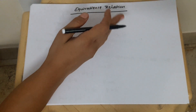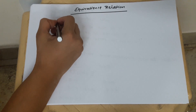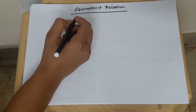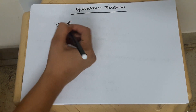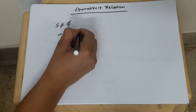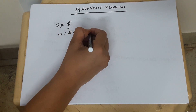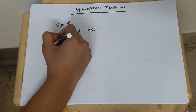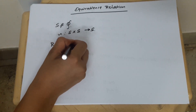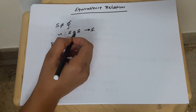Before giving a formal definition of this topic, I will explain what is the meaning of this relation. Suppose S is any non-empty set. We are going to define a relation on this set — a relation, not a function, from S cross S to S.